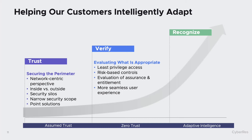A least privilege model requires a more mature concept and understanding of risk, because now you need to know where you need greater security and where you don't — which of the resources you're protecting need more granular security. You need to constantly be evaluating both assurances and entitlements: who is this actor, should they really get access to what they're requesting? One of the really cool side effects of a least privileged or zero trust model is it typically offers a more seamless user experience.